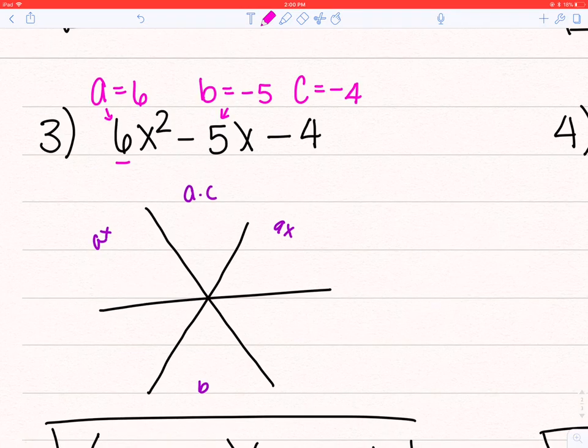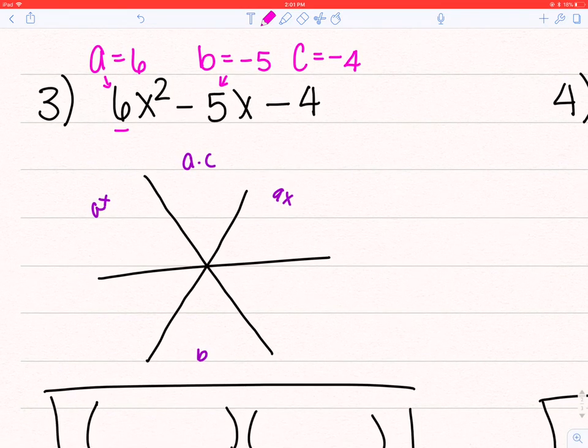So I'm going to fill out my Snowflake. a times c on top, 6 times negative 4 gives me negative 24. And then I have b on the bottom, a x, a x.